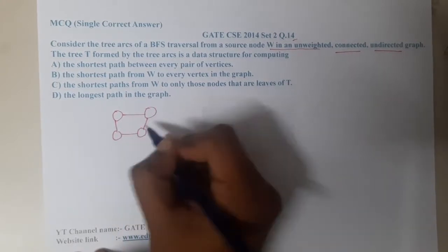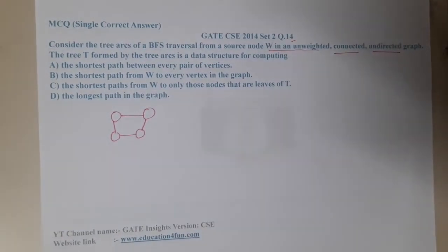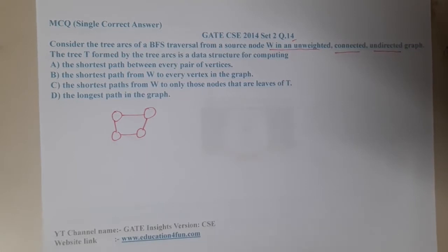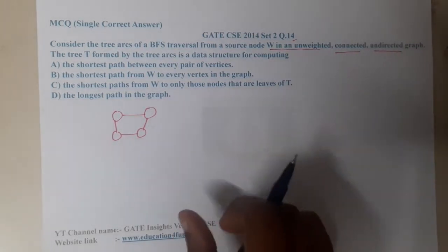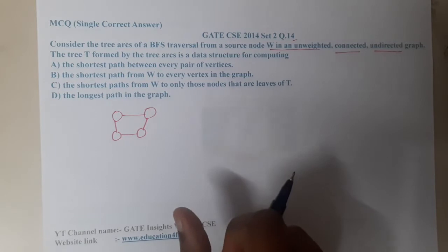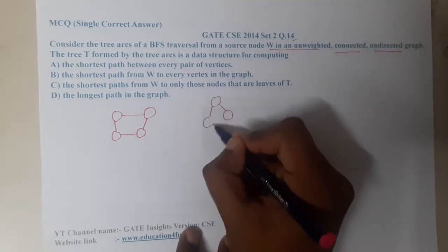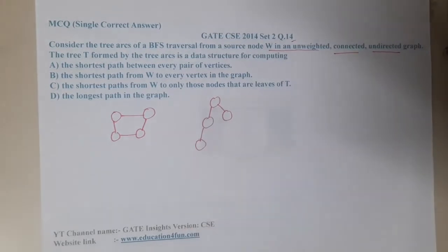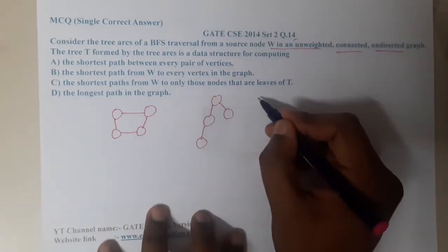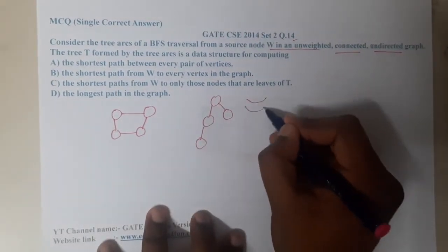This is a simple graph. Now what he is saying is he's trying to consider a tree arc. Tree arc means how BFS will work. BFS will work breadth by breadth, layer by layer.